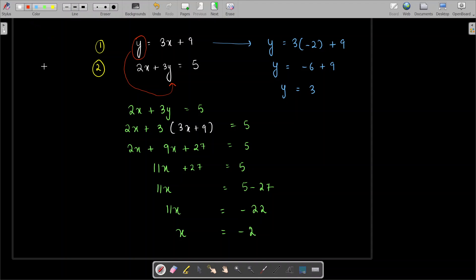So Y equals negative 6 plus 9, so Y equals 3. So the solution to this system of equations is negative 2 comma 3.